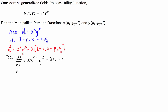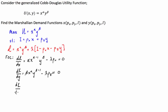Next, the derivative of the Lagrangian with respect to Y equals beta times X to the alpha, times Y to the power of beta minus 1, minus lambda times the price of Y, and that equals zero. Finally, we take the derivative of our Lagrangian function with respect to the Lagrangian multiplier lambda, and that's just equal to: income minus P of X times X minus P of Y times Y equals zero.